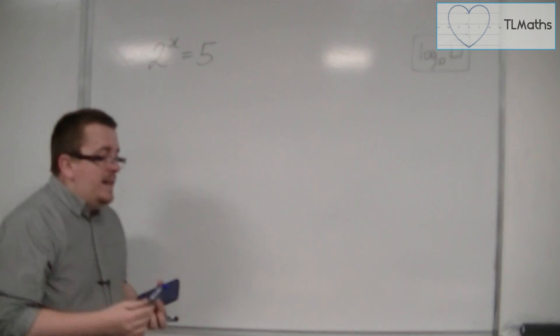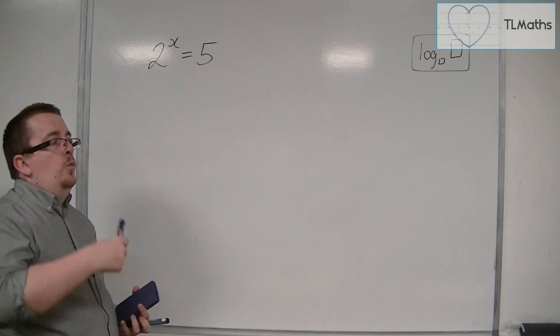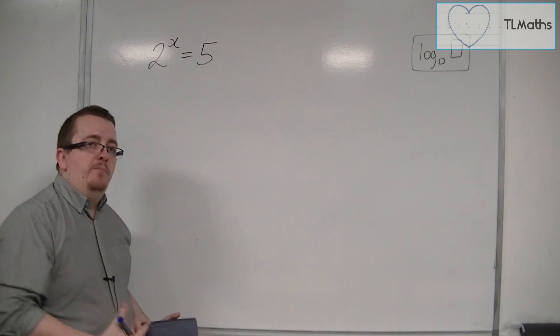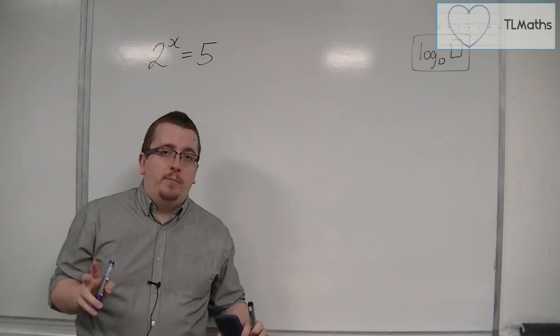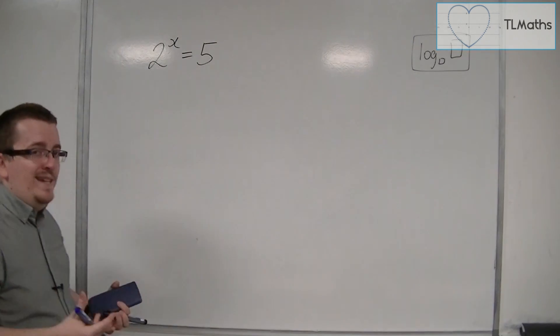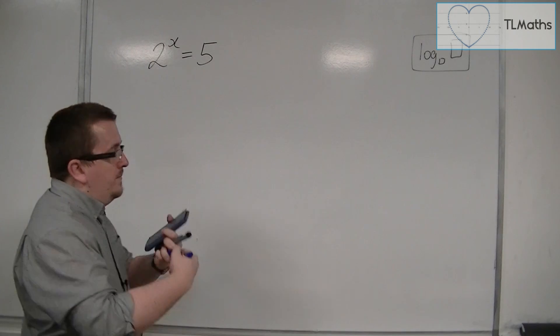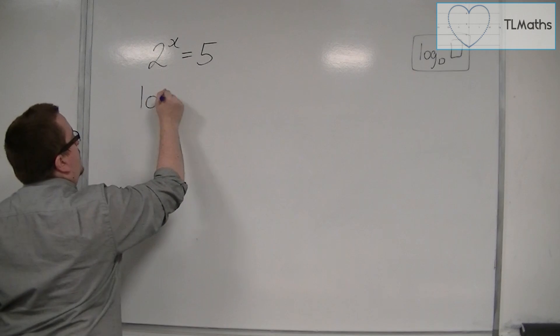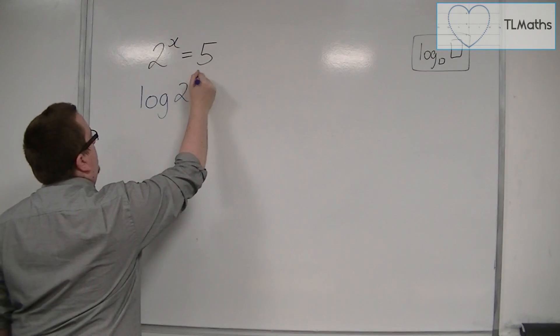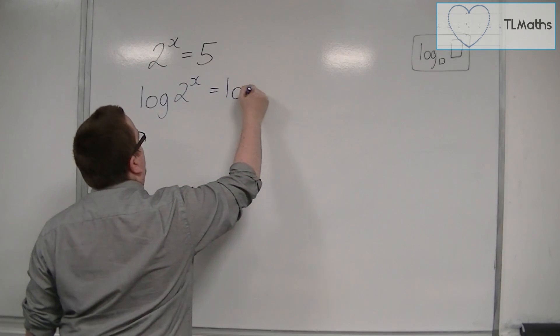So the idea is that we are going to take logarithms of both sides. For short, it's often called logging both sides. We'll have log of 2 to the x is equal to log of 5.